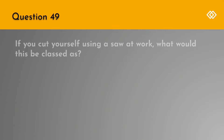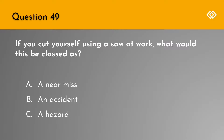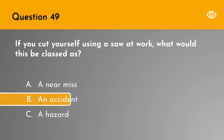Question 49. If you cut yourself using a saw at work, what would this be classed as? A. A near miss. B. An accident. Or C. A hazard. The correct answer is B. An accident.